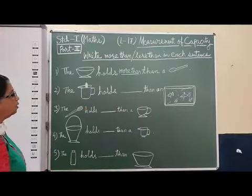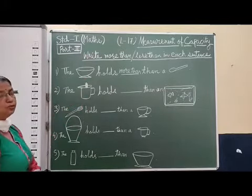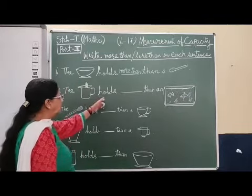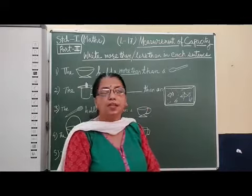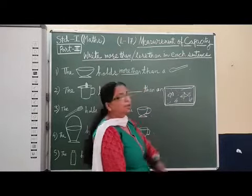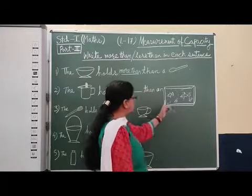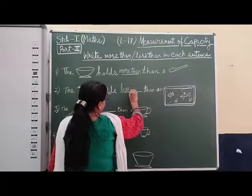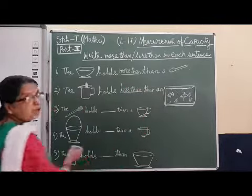The next one is a jug — the jug you use while drinking water. The jug holds dash than an aquarium. Some people keep an aquarium at home because they enjoy playing with the fish. A jug can hold less than an aquarium. You can estimate by yourself and write 'more than' or 'less than'.